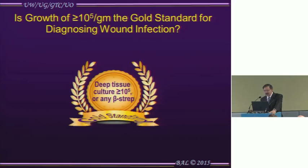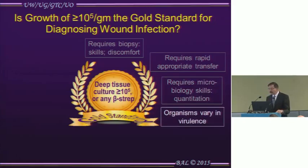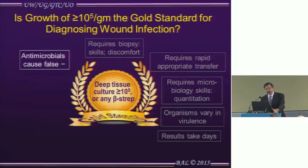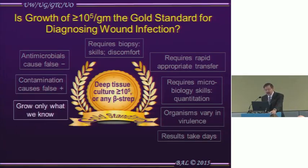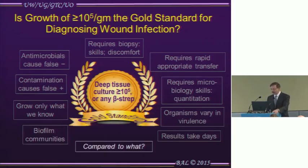So here's our gold standard: 10 to the 5th organisms per gram of tissue. It requires a biopsy, which takes skill and causes discomfort. It requires rapid transfer to the laboratory, and the lab has to know how and be willing to do it. The organisms that grow vary in virulence. Results take days, so you have to decide today whether a patient gets antibiotics. If they're on antibiotics, you get false negatives; if the wound is contaminated along the way, you get false positives. We only grow what we know how to grow — molecular testing shows we're missing organisms, identifying perhaps only 10% of all organisms. Biofilm communities can't be detected by culture, and we have no clear reference to compare this gold standard against.